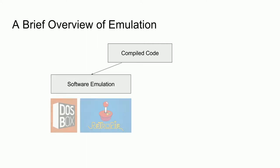In both of the aforementioned cases, the emulation method was from software. This method requires a program running on a modern system to read and execute compiled code — i.e., the game — by interpreting the instructions and manipulating a hardware model built in software.